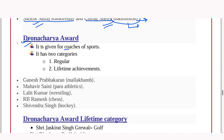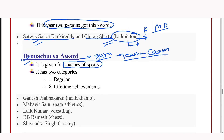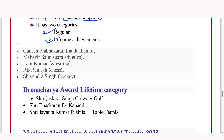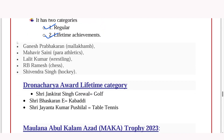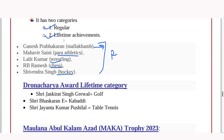The Dronacharya Award is given to coaches — it is called the coaches' award. You should know what Malkham is. The Dronacharya Award recipients include Mahavir Saini for para-athletics, Lalit Kumar, R.B. Ramesh Chaikelly, and Shivendra Singh. You have to remember which persons are associated with what kind of sport, because MCQs will be many from this section.